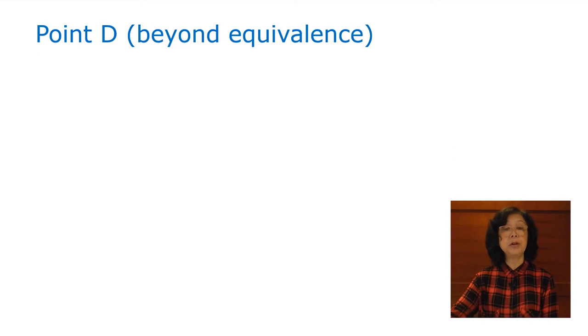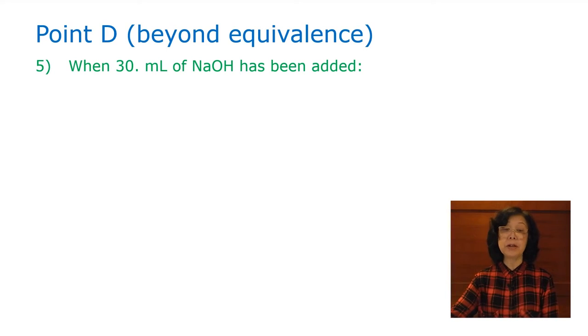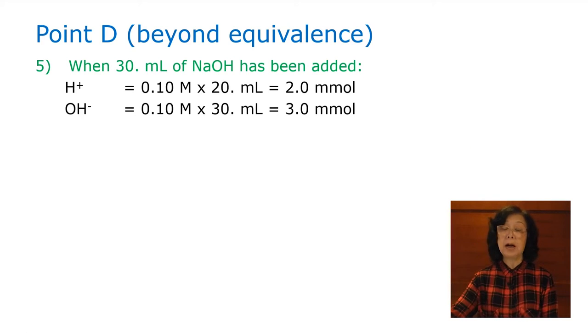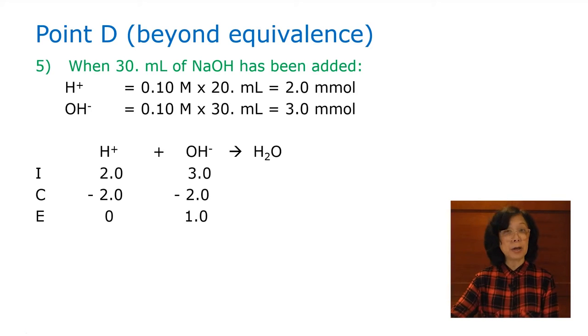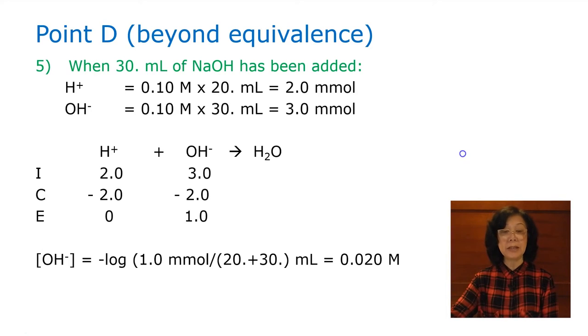The last point, beyond the equivalence point, when we added excess of sodium hydroxide. This time we added 30 milliliter, 10 milliliter beyond the equivalence point, so hydrogen ion is still 2 millimole. Hydroxide now is 3 millimoles. And setting up the ICE table, we then have 1 millimole of the hydroxide ion remaining in excess over total volume of 50 milliliter, which is 0.02 molar.